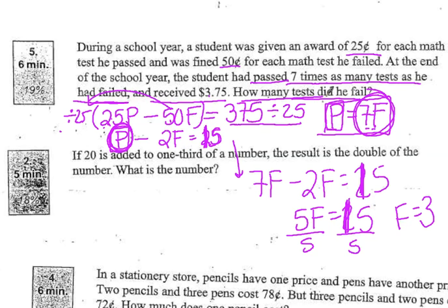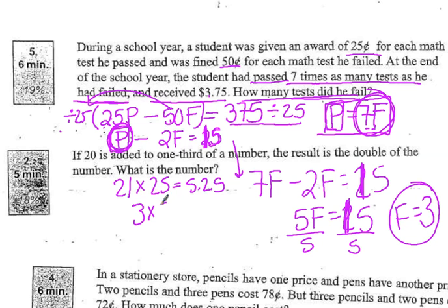So, the question is, how many tests did he fail? He failed 3. And we could check this by saying that we know that he passed 7 times as many as he failed. So, if he failed 3, 7 times that is 21. So, if I take 25, and I multiply it by the 25 cents that he earned for each test that he passed, you get $5.25. And if you take every test that he failed, which is 3, and you multiply that by 50 cents, you get $1.50. And if you subtract that away, you get $3.75, which is exactly how much money he made. So, that's how you could solve that problem.